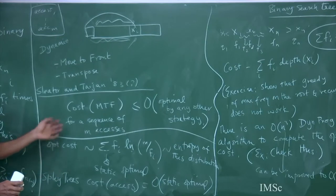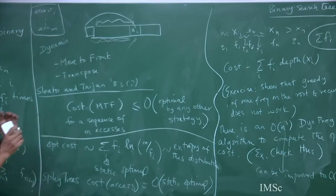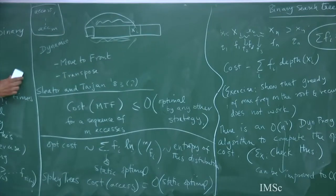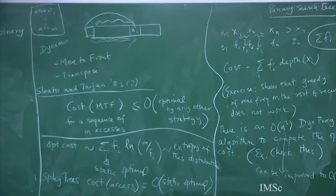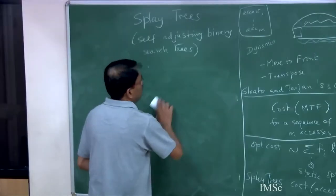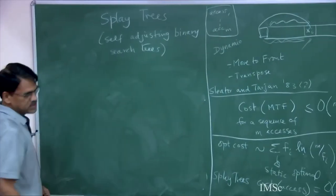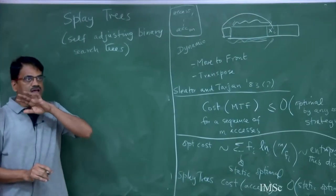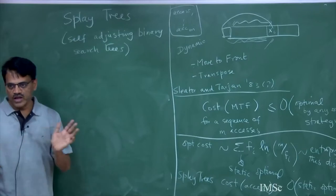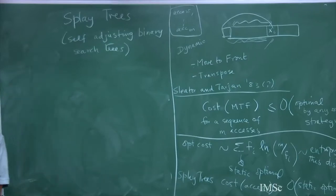There is a lot of work around this conjecture. This is one of the recent current topics of research in data structures. So what are self-adjusting or splay trees? The idea is that we are not going to store any balance information in the search tree.